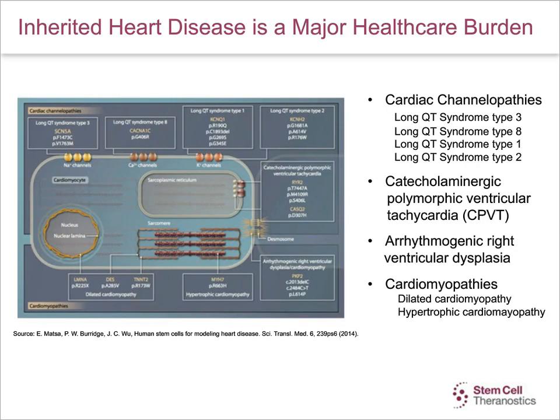Inherited heart diseases can be divided into four types. Channelopathies, which are a heterogeneous group of disorders resulting from the dysfunction of ion channels located in the membranes of heart muscle cells. Catecholaminergic polymorphic ventricular tachycardia, CPVT, which is the rhythm disorder of the ventricles of the heart. Arrhythmogenic right ventricular dysplasia, ARVD, which is also a type of cardiomyopathy with defect in the desmosomes. And fourth, cardiomyopathy, which is a disorder characterized by abnormal heart muscles, leading to a compromised function of the heart.